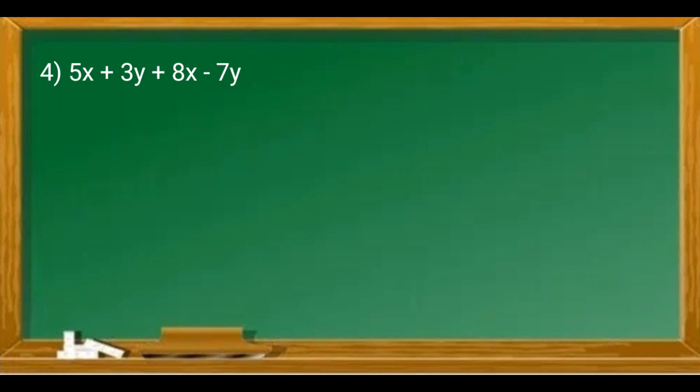Example 4: 5x + 3y + 8x - 7y. We put all the x's together: 5x + 8x, and the y's together: 3y - 7y. 5 + 8 = 13 and 3 - 7 = -4. So the answer is 13x - 4y.